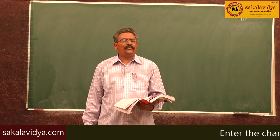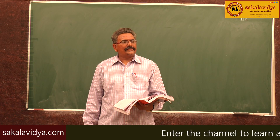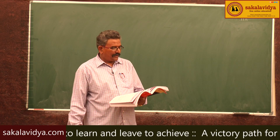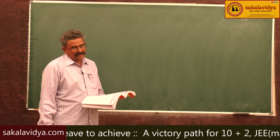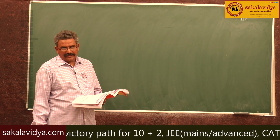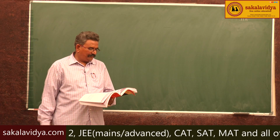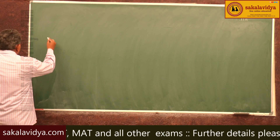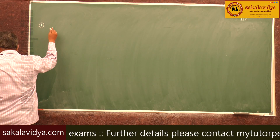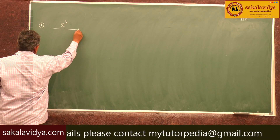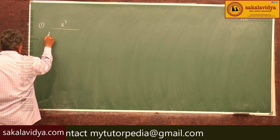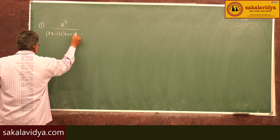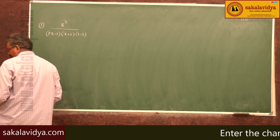Let us discuss how to find the partial fractions of an improper fraction which is in the form of f(x) by g(x). Partial fractions of f(x) by g(x), where f(x) by g(x) is an improper fraction. Let us go directly to the example. Problem: resolve x³ by (2x-1)(x+2)(x-3) into partial fractions.